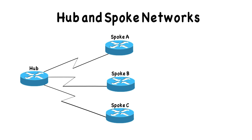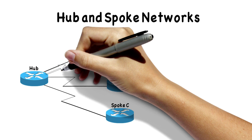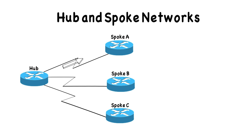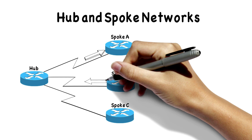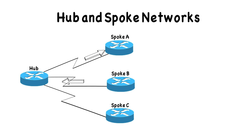Maybe the hub is the site that gets the most traffic — perhaps that's the headquarters site — and we're connecting out to remote sales offices. There's not much need for one remote sales office to talk to another, so normally traffic goes from the hub up to a spoke. But occasionally we might want to send traffic from spoke B to spoke C. Can we do that? There's no direct connection between those two. Yes, we can, but it's not an optimal path because we have to go through the hub and then down to spoke C.